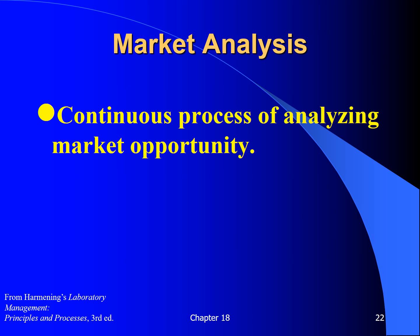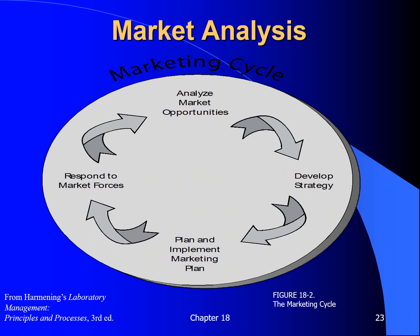The basic marketing concepts discussed here must be integrated into a marketing plan developed in the context of the organization's overall business strategy. The marketing research process begins by identifying a problem and developing the research plan and methodology. Data are then collected and analyzed. The process culminates with a final report and presentation describing the findings, including developing a marketing strategy, planning and implementing the plan, and revising the plan by responding to market forces. The marketing process is a continuous cycle because market forces and the marketing environment are changing continually, and revisions to the marketing plan are made in response to these changes.